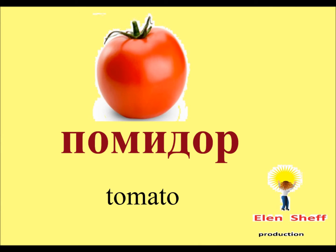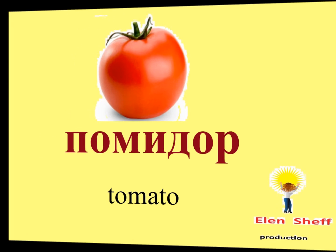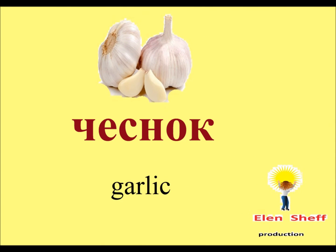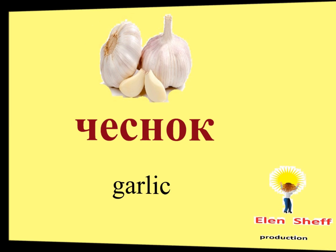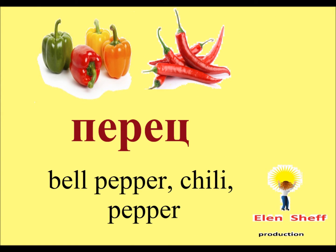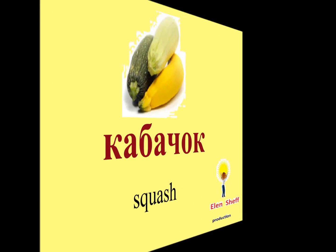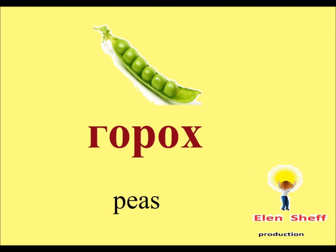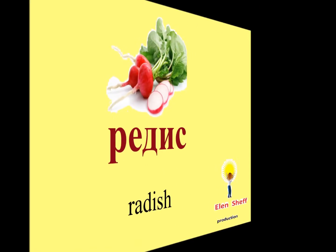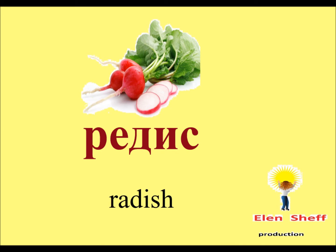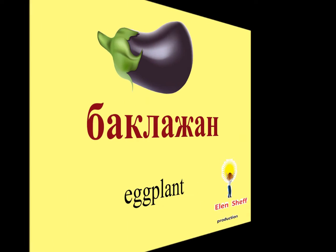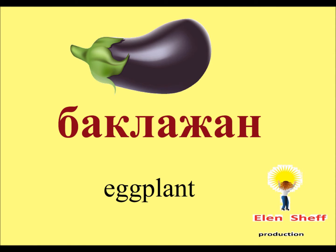Помидор. Sometimes we call it томат, as tomato. Лук. Чеснок. Пе-рец. Перец — all kinds of pepper: bell pepper, чили. Ка-ба-чёк. Кабачок. Го-рох. Горох. Редис. Тык-ва. Тыква. Бак-ла-жан. Баклажан.